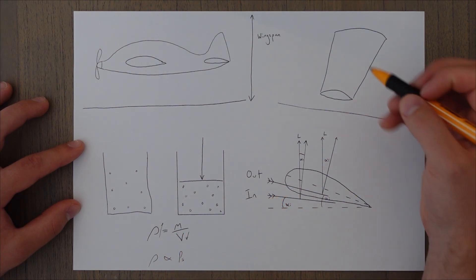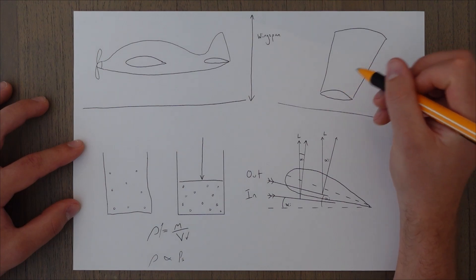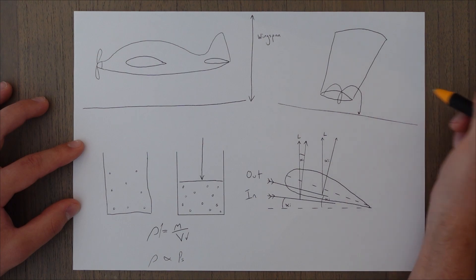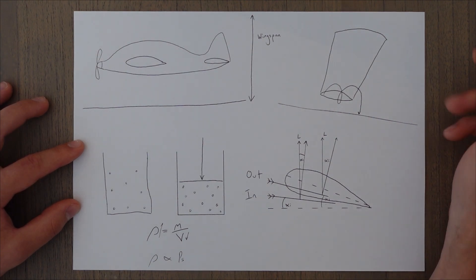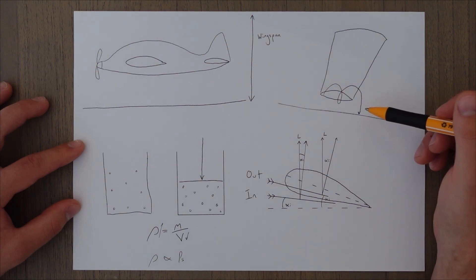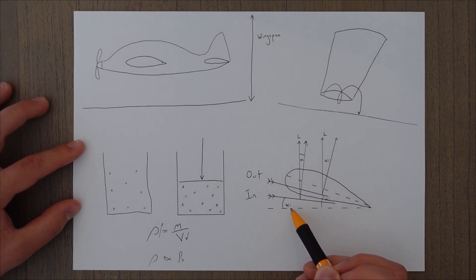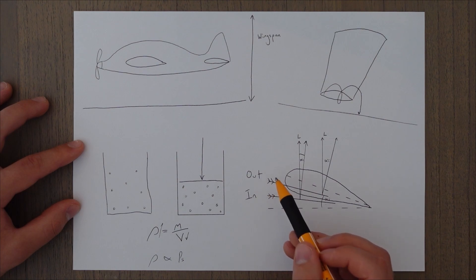The second thing is this reduction in wingtip vortices, so they come off the edge, and then they start to hit the ground, and stop, and reduce in strength. This reduction in strength means we have a reduced amount of downwash, and therefore our induced angle of attack reduces when we compare it to the condition where we are outside of ground effect.